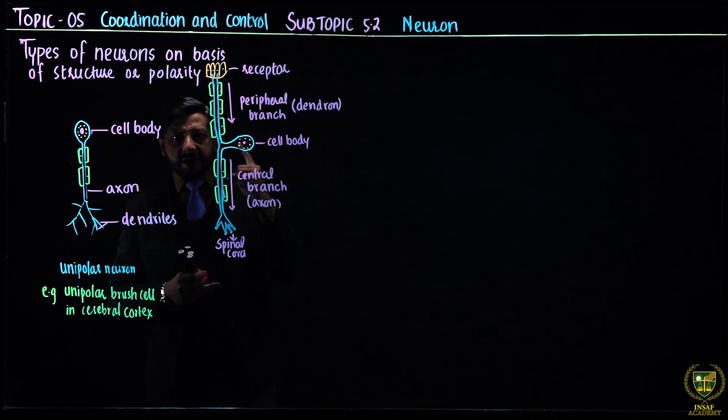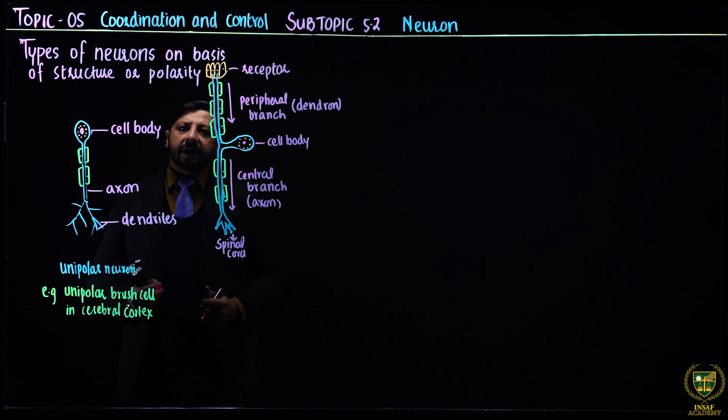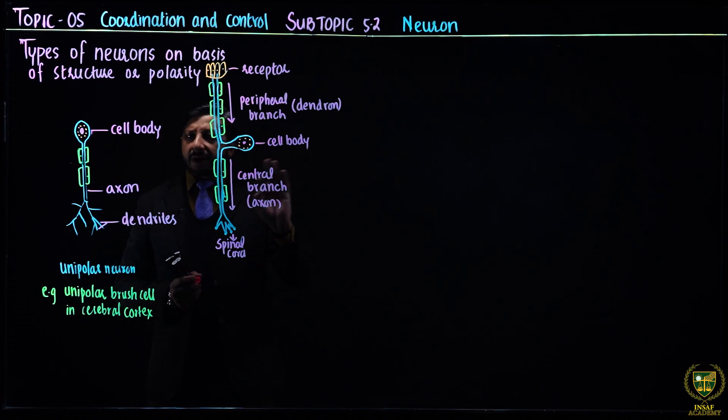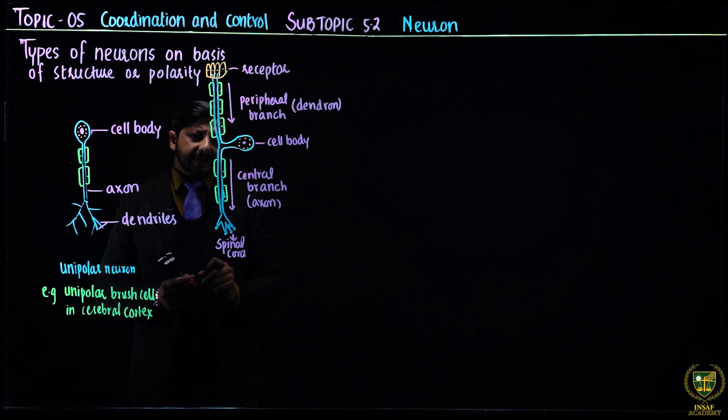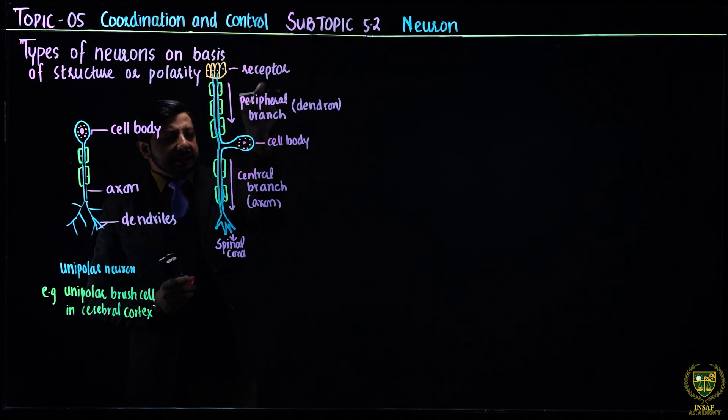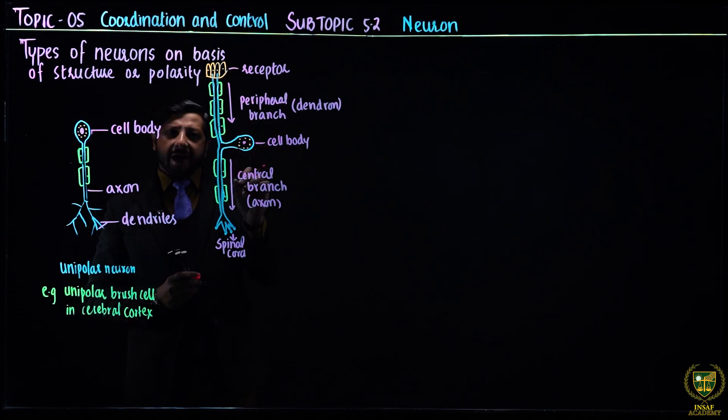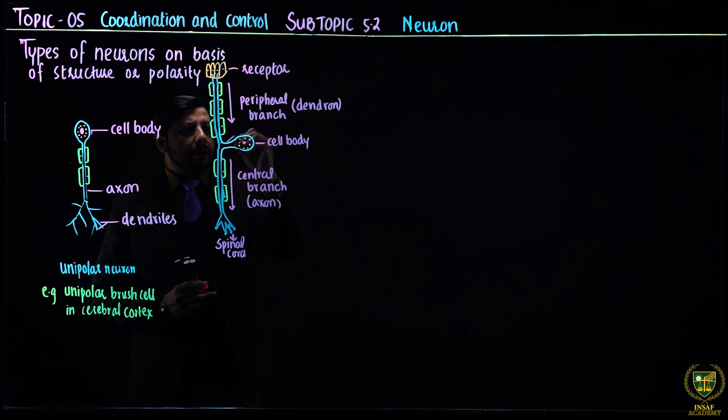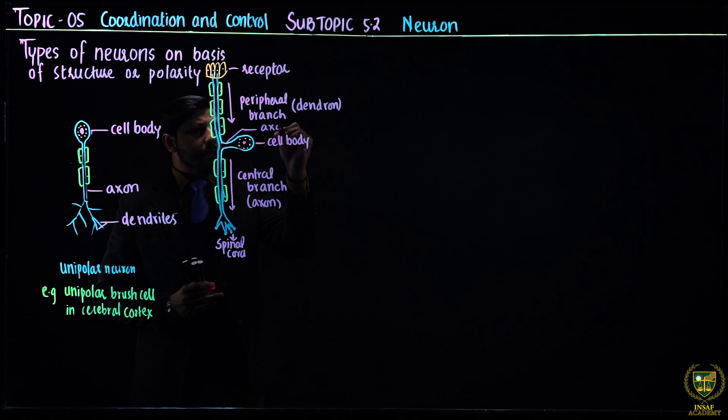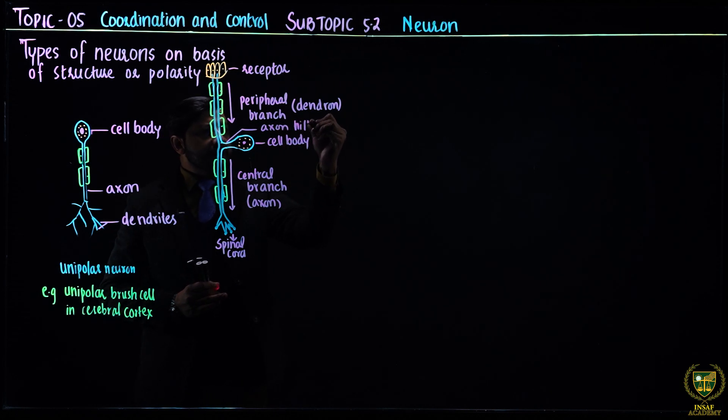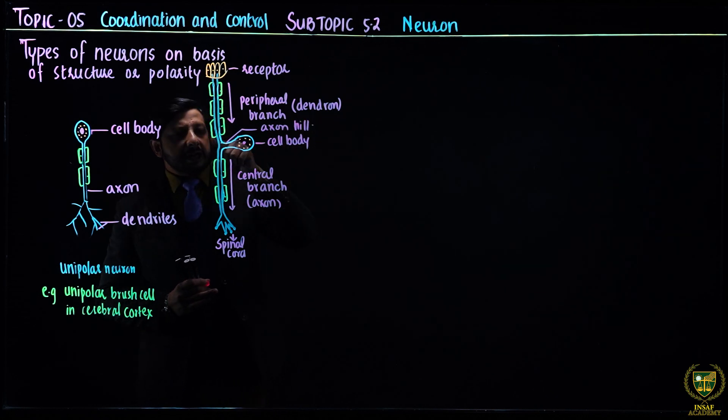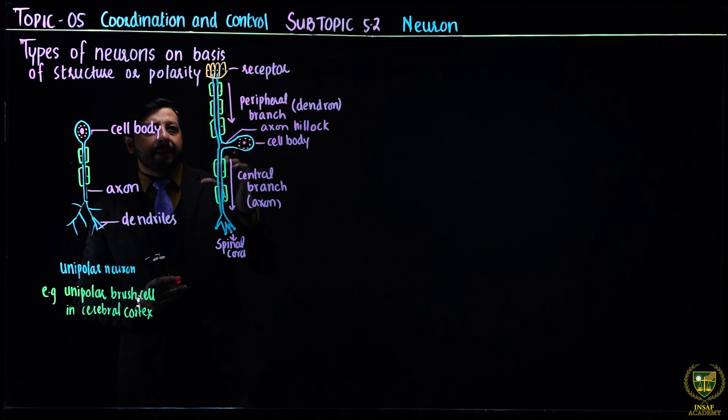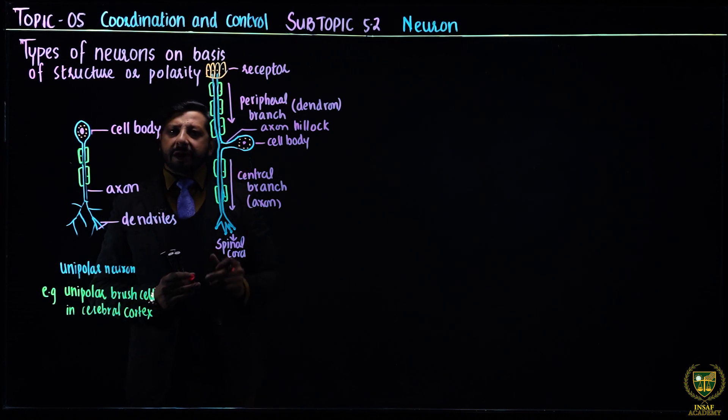This central branch, functionally, carries the message away from the cell body. This is the cell body. So we call it axon. And this receives message from the receptor, so we call it dendron. When a single fiber carries message towards the cell body, we call it dendron. And it doesn't have Nissl granules. This is the axon hillock, where this process emerges.